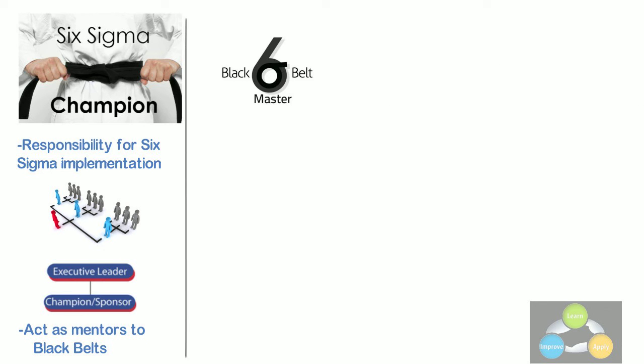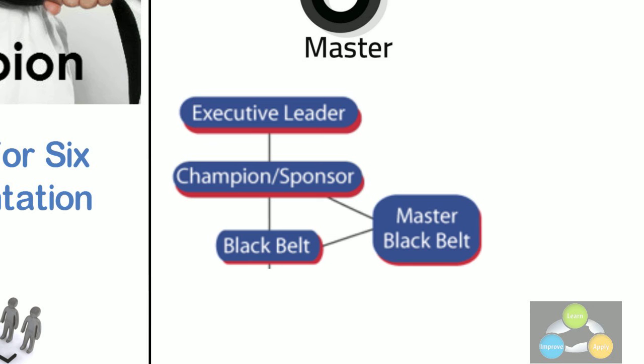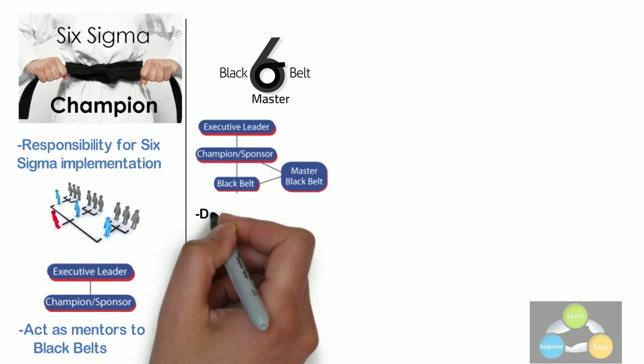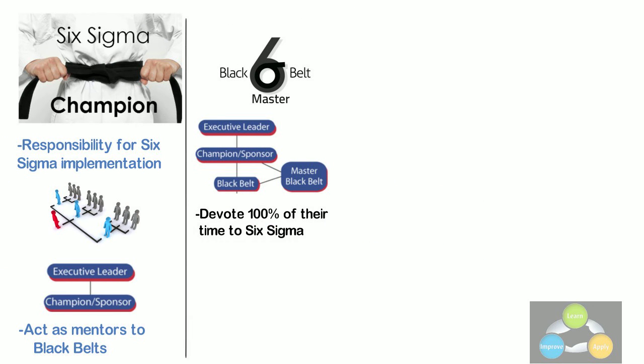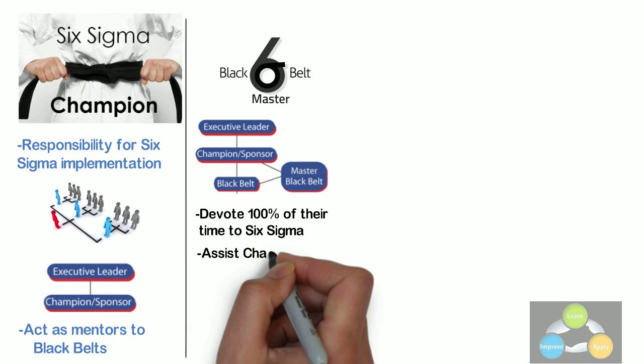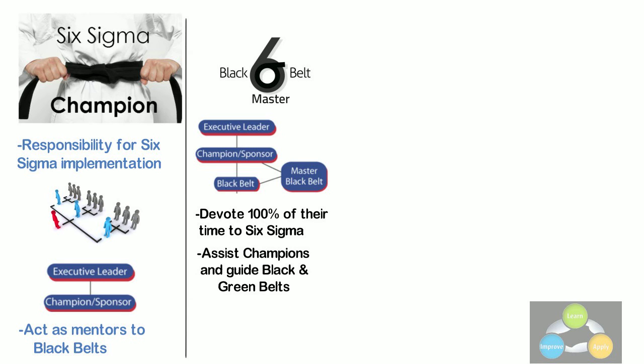Master Black Belts. They are identified by champions, act as in-house coaches on Six Sigma. They devote 100% of their time to Six Sigma. They assist champions and guide Black Belts as well as Green Belts. Apart from statistical tasks, they spend their time on ensuring consistent application of Six Sigma across various functions and departments.